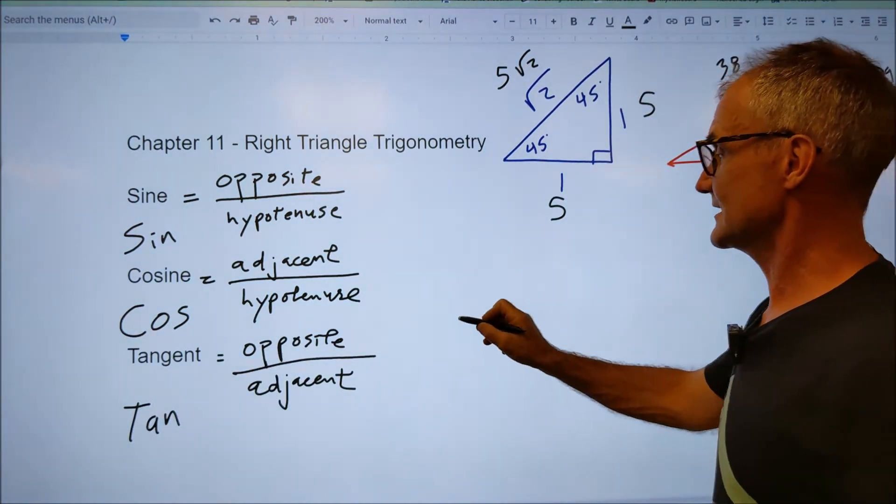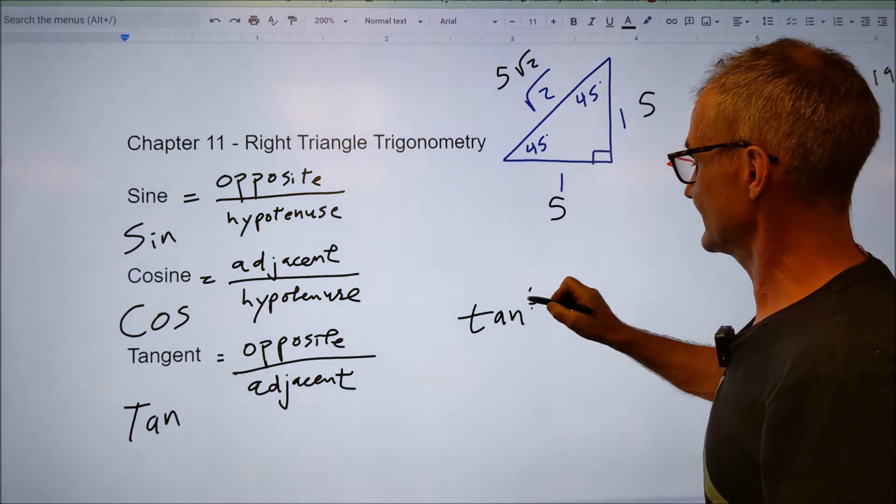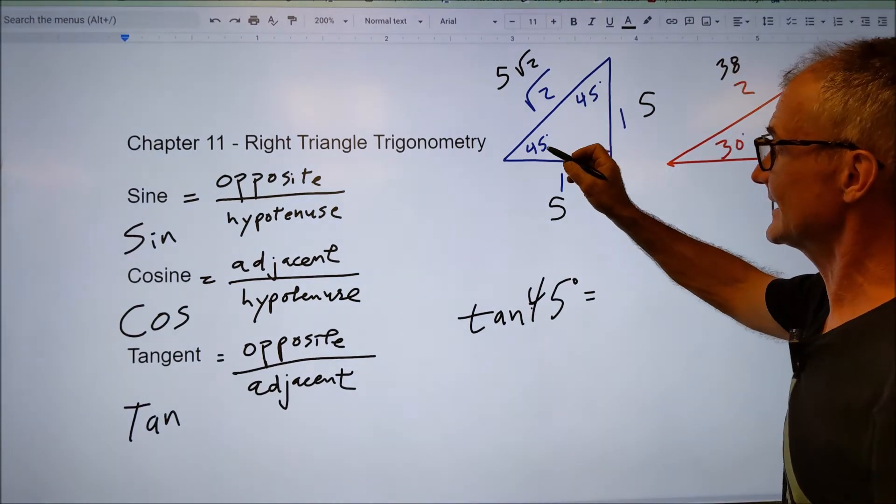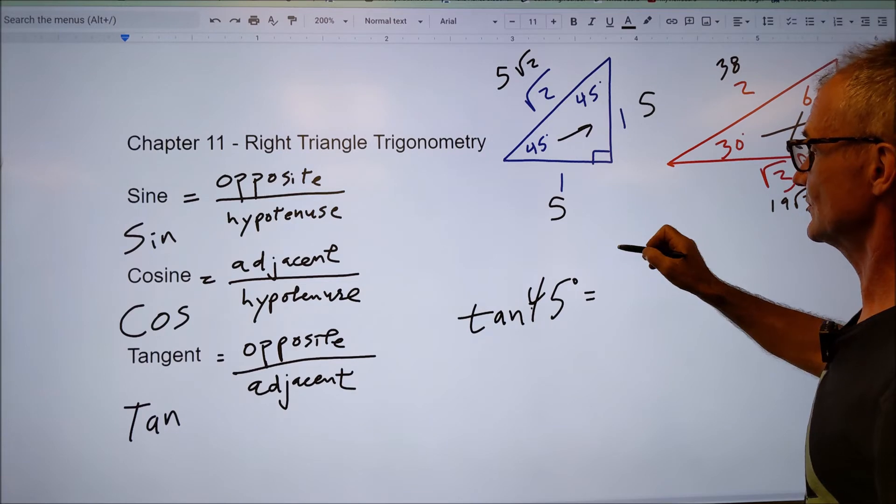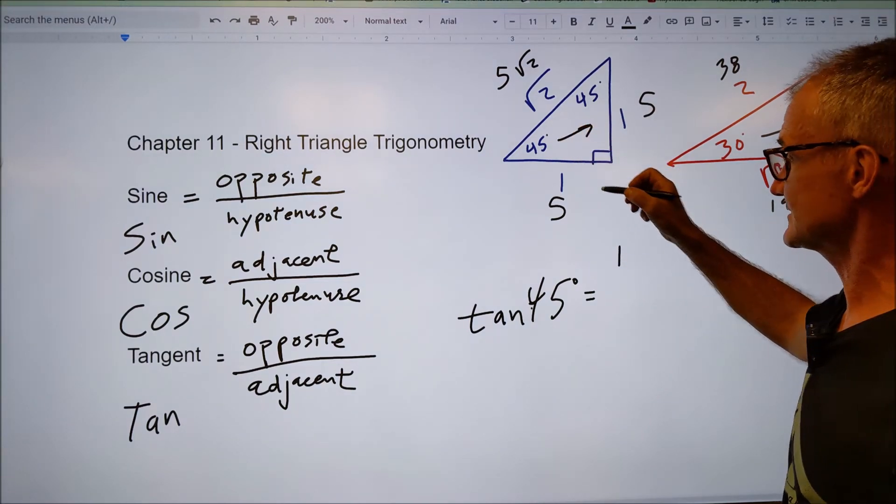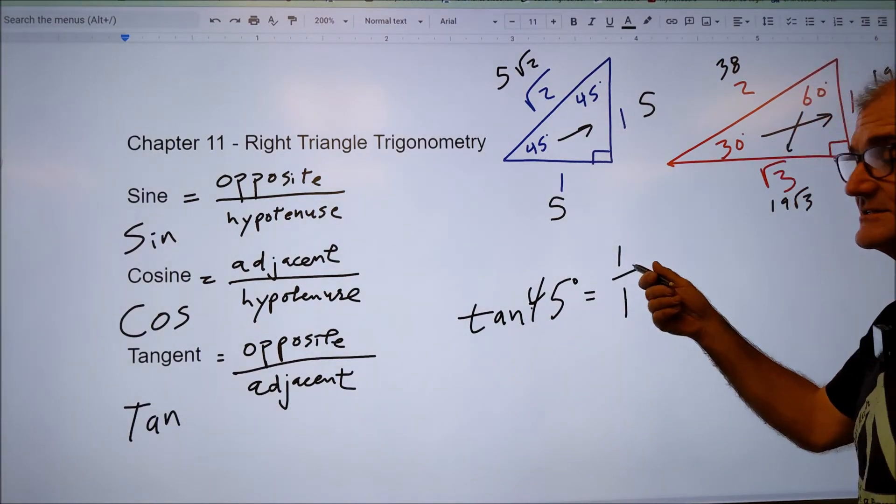So if the problem is, say, what is a tangent of 45 degrees, so the tangent of 45 degrees, I look at that angle, what's opposite 45? Well, there's a one, and if I'm in blue, opposite, adjacent means next to, it'd be one over one. So tangent of 45 degrees is equal to one.